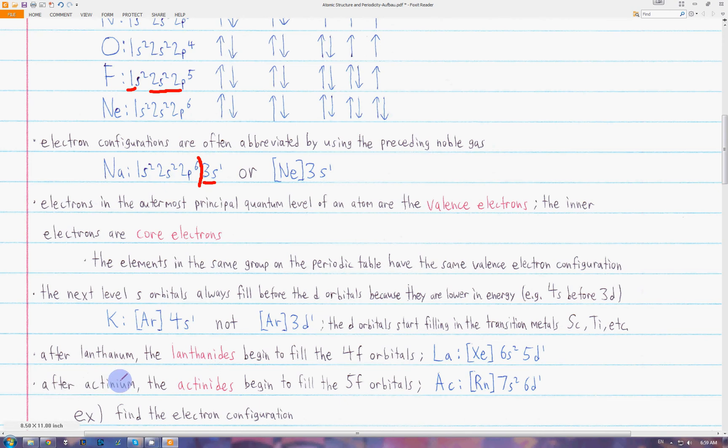Similarly, we have actinium, which is also in the d orbitals. Its electron configuration is radon, 7s2, 6d1. Then after actinium, the actinides will fill the 5f orbitals. After the 5f orbitals fill, it will go back to the transition metals to fill the 6d orbitals.